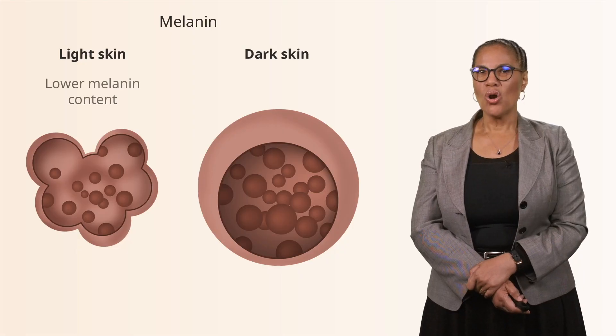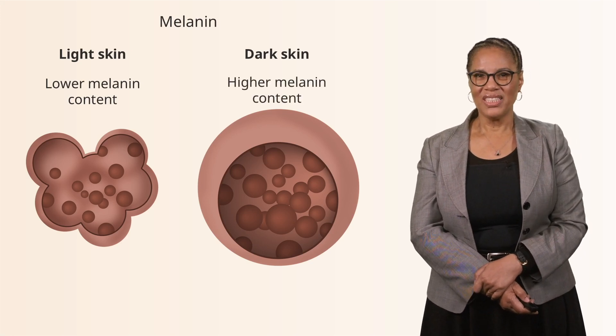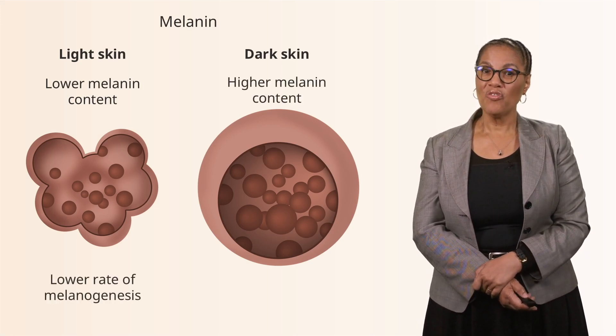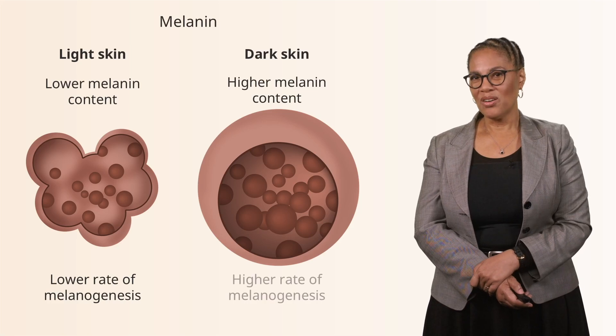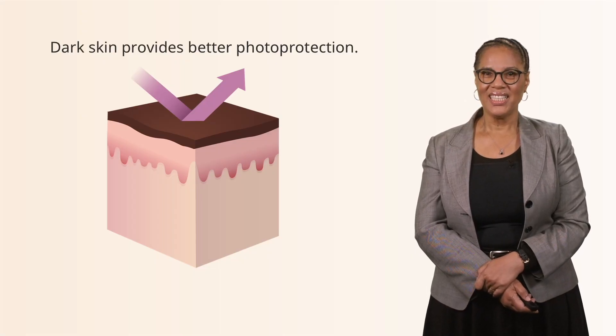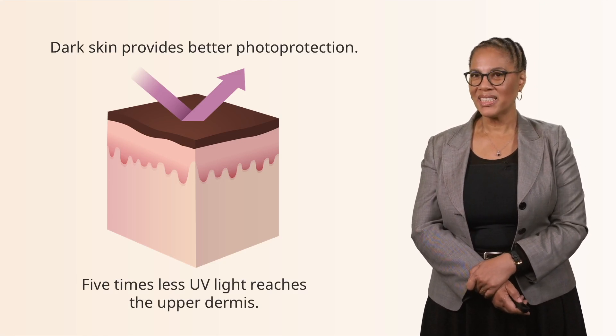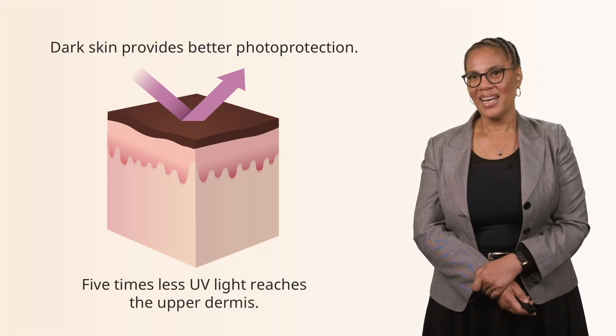Regarding melanin: light skin has a lower melanin content and a lower rate of melanogenesis compared to dark skin, which has a higher melanin content. Due to the melanosome size and melanin content, dark skin provides better photo protection — five times less UV light reaches the upper dermis in black skin compared to lighter skin.